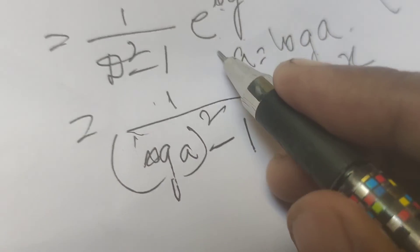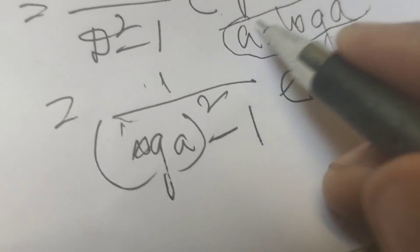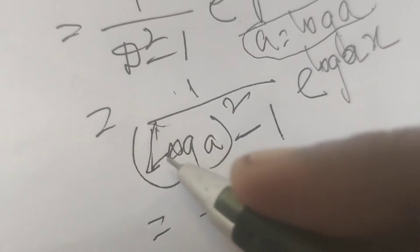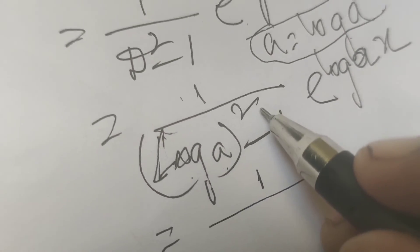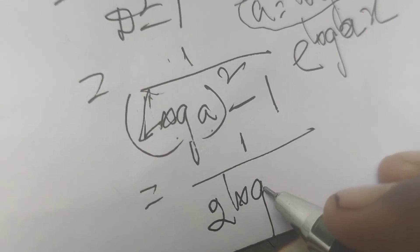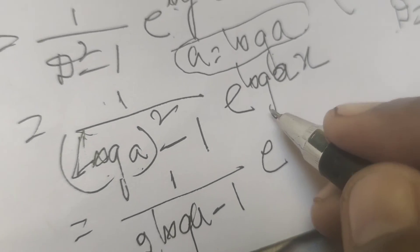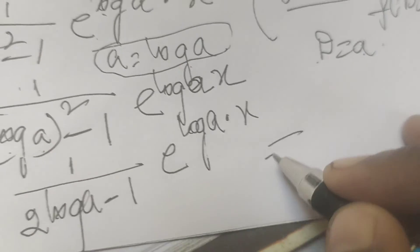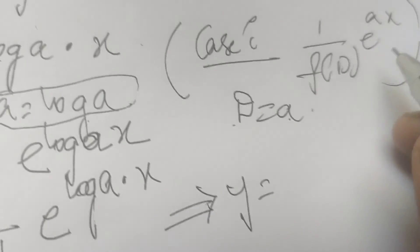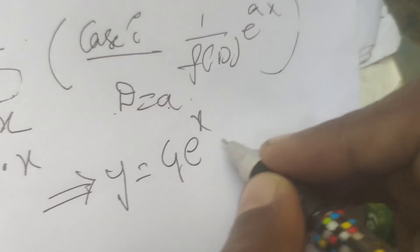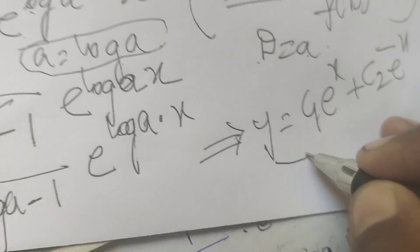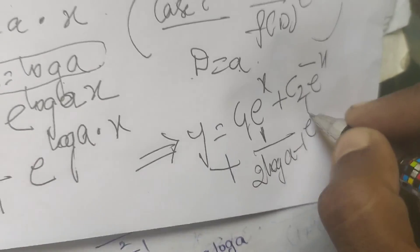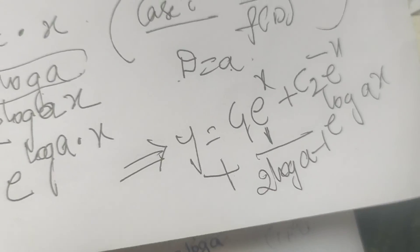Using the formula with log a, we write PI = 1/(2·log a - 1) · e^(x·log a). Therefore, the complete solution is y = CF + PI = c₁e^x + c₂e^(-x) + 1/(2·log a - 1) · e^(x·log a). Thank you.